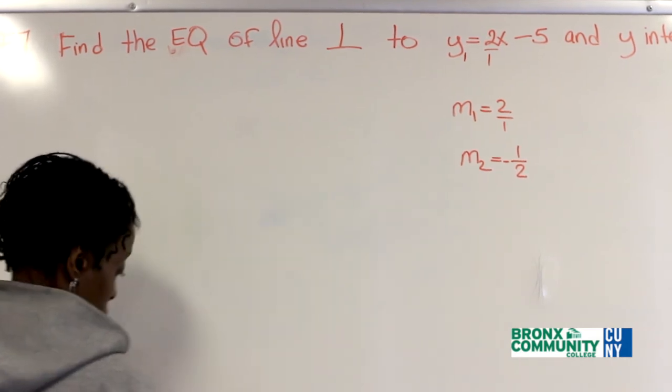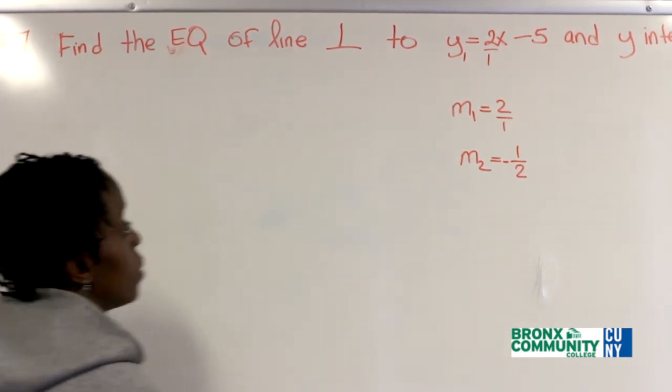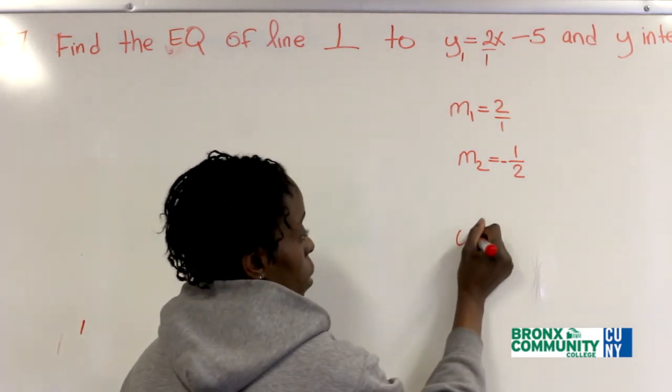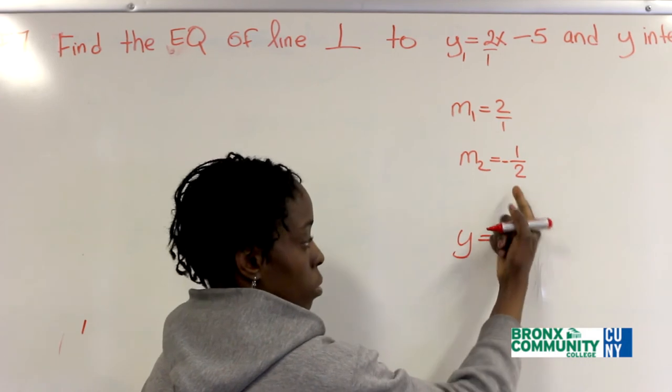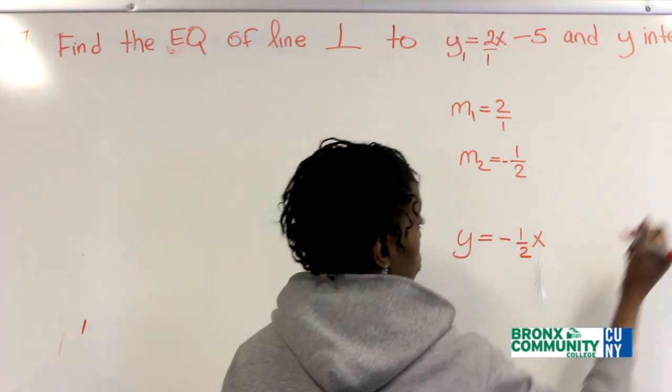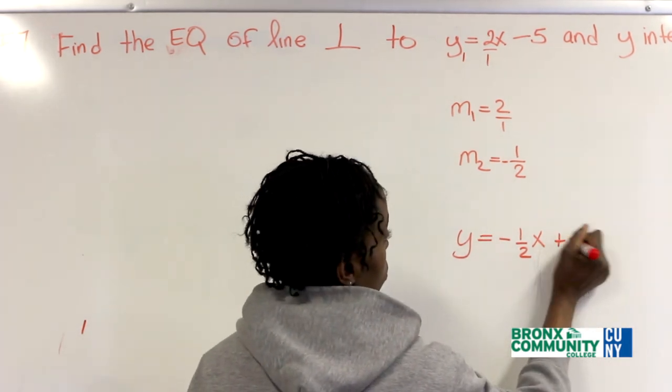So go back. Yes. So M2 is negative 1 over 2. Then same thing. Y is equal to negative 1 over 2x, and the y intercept was given plus 1.